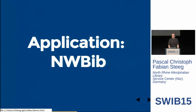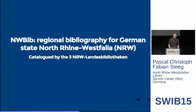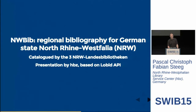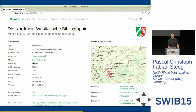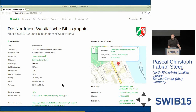Let's take a look at a more complex application. NVBIP is the regional bibliography for the German state of North Rhine-Westphalia. It's catalogued by the three so-called NRW Landesbibliotheken — in NRW, instead of a single state library, there is a distributed model of three libraries. The presentation is done by Habitset and the new presentation is based on the Lobbit API. On the details page for one title, there is a map showing not just libraries in an area, but the libraries that have holdings of this particular title. Clicking a marker zooms in and provides a link to the library and to the local catalog.